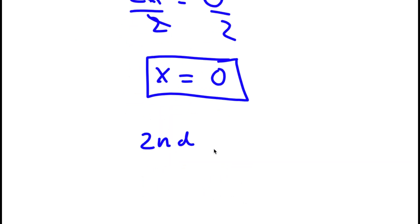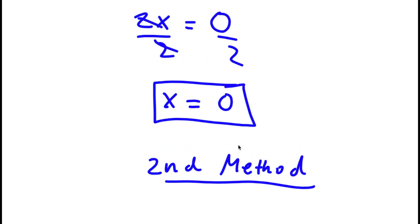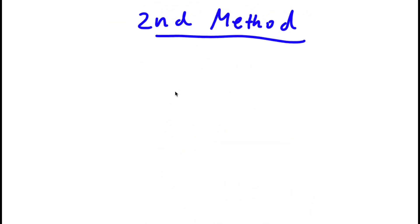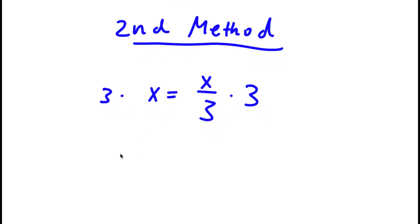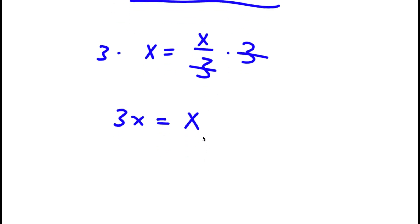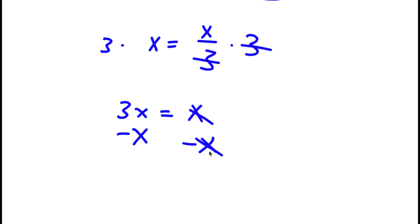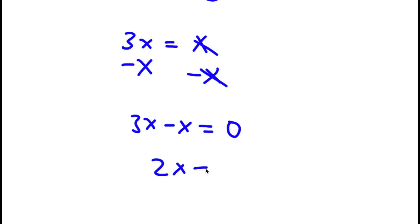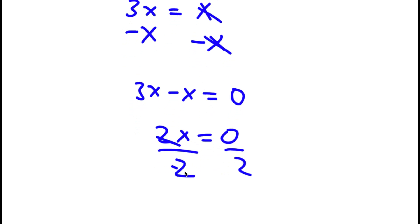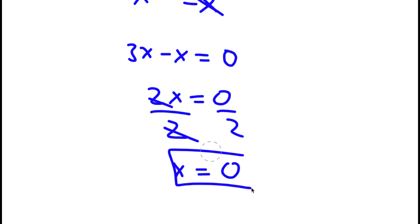Now for the second method of solving this problem. My original problem was x equals x over 3. This time, instead of subtracting x over 3 on both sides, I'm simply going to multiply both sides by 3. So I have 3 times x is equal to x over 3 times 3. 3 times x is simply 3x, and x over 3 times 3 — the 3s cancel out — leaving x. Now I'm going to subtract x from both sides. These two cancel out, leaving 3x minus x equals 0. Well, 3x minus x is simply 2x. So I have 2x equals 0. Dividing both sides by 2, these cancel out, and x is equal to 0 divided by 2, which is 0.